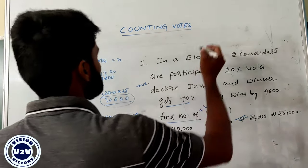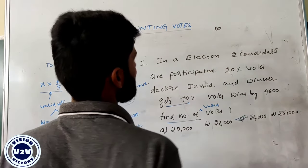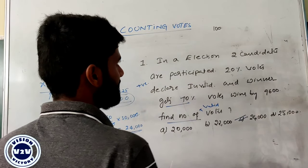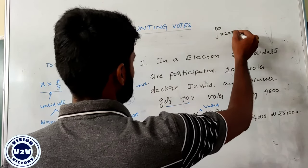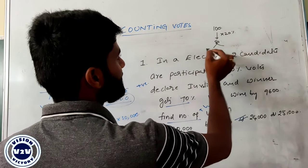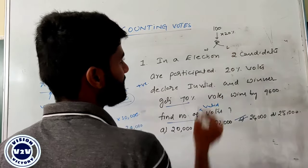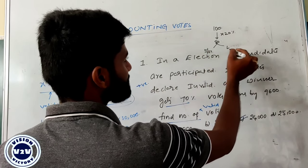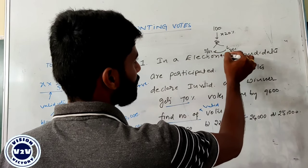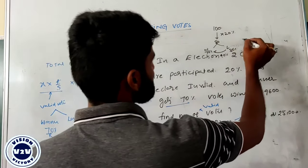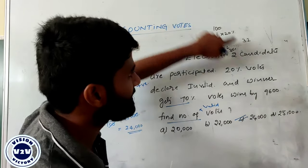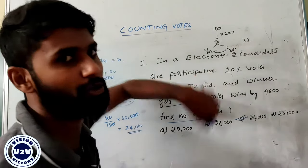We will go to one more approach. We initialize with 100 votes. In the election there are 100 votes and 20 percentage are declared invalid, so 80 votes we need to consider. Out of 80, we distribute winner and loser. Winner gets 70 percentage, loser gets 30 percentage. Winner wins by 40 percentage of votes. Out of 80, 40 percentage becomes 32. So out of 100, 32 votes is the margin of winner over loser.